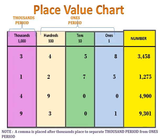So, in order to separate two periods, we place a comma between the numbers. Starting from the first example: 3 in the 1,000s place, 4 in the 100s place, 5 in the 10s place, and 8 in the 1s place — forming the number 3,458. The next example is 1,275. Then we have 4,900 — there is nothing in the 10s and 1s places, so we put 0 there and read it as 4,900. The last one is 9,301.